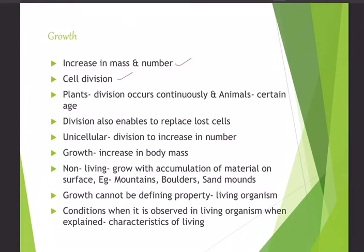Plants grow throughout life thanks to a special tissue called meristematic tissue, which makes plants grow continuously. Human beings don't have meristematic tissue, so we can only grow up to a certain age. Division also enables replacement of lost cells — mitosis creates new cells as old cells wear out.